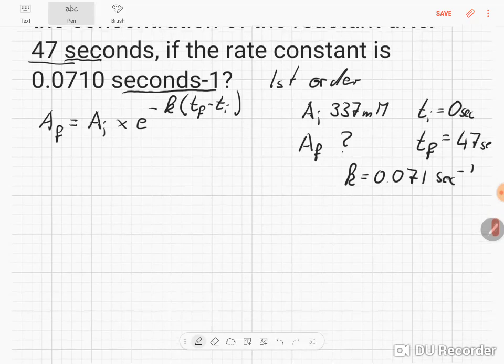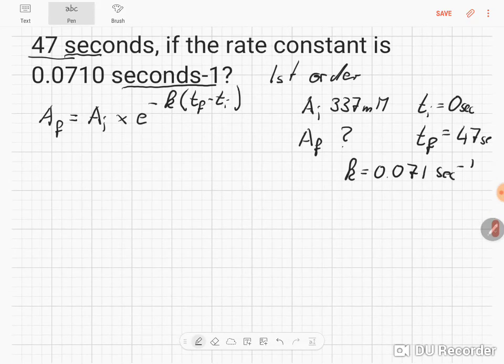Now we have all the information and just need to plug these numbers into the equation. A final equals A initial, which was 337 millimolar, times e to the power of minus 0